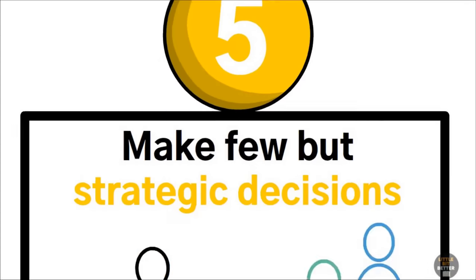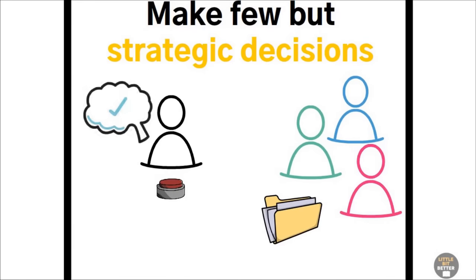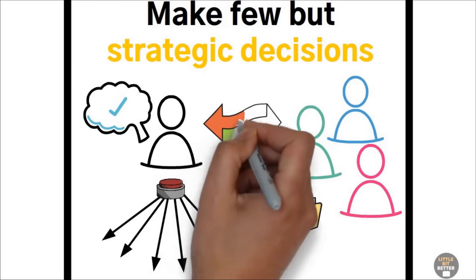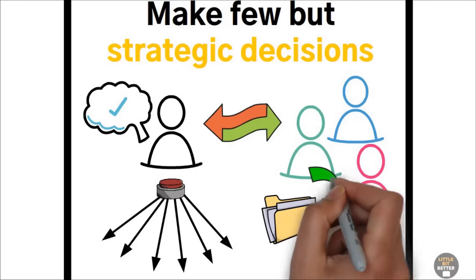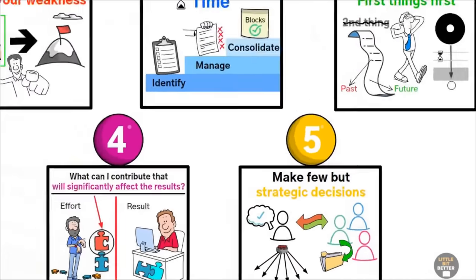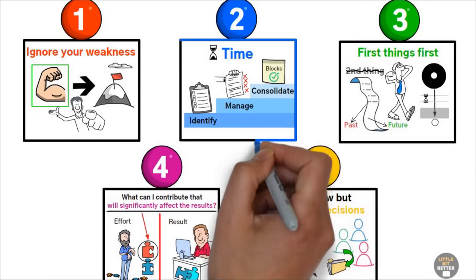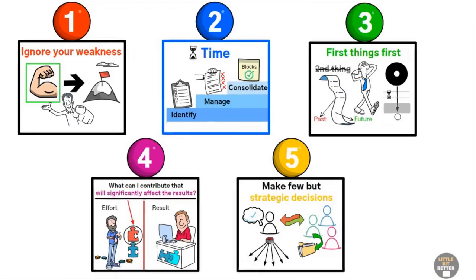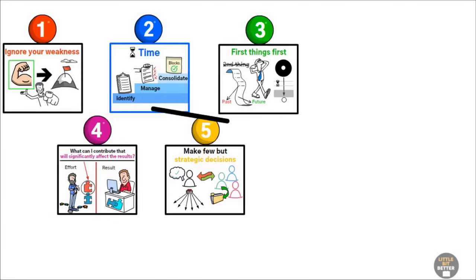Number five, make few but strategic decisions that take care of many of the small decisions. Whenever possible, argue your decisions with others and get their opinions as well. In lesson number two, we briefly discussed time management. If you want to go deeper and improve your time management skills, then check out the video on your screen. I hope this video helped you just a little bit. Thanks for watching.